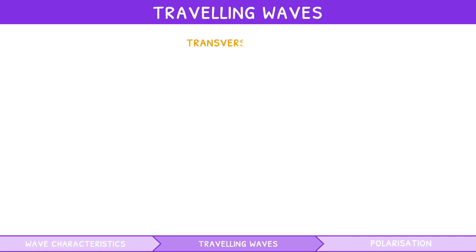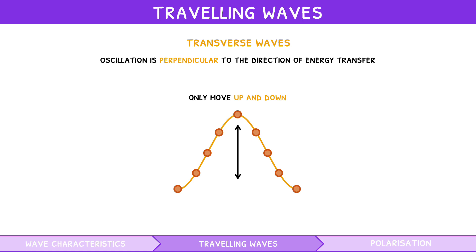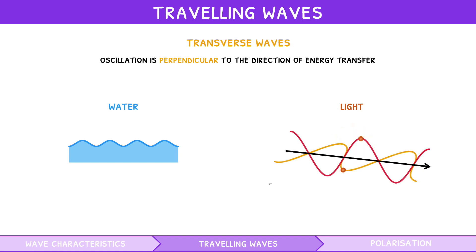In transverse waves, the oscillation is perpendicular to the direction of energy transfer. In these, the particles only move up and down from their mean position to create the wave shape. However, energy travels perpendicular to this in the direction of the wave. Common examples include water waves and light. However, light is special because it is composed of two transverse waves, an electric wave and a magnetic wave, collectively termed an electromagnetic wave.